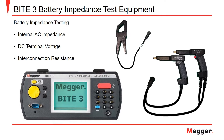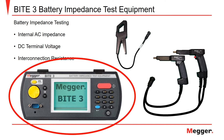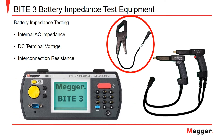The Megger Byte 3 battery impedance test equipment allows for measurements of a battery's internal impedance, terminal voltage, and the resistance of the intercell straps along the battery string. Here we can see the Byte 3 transceiver, amp clamp, and test leads.